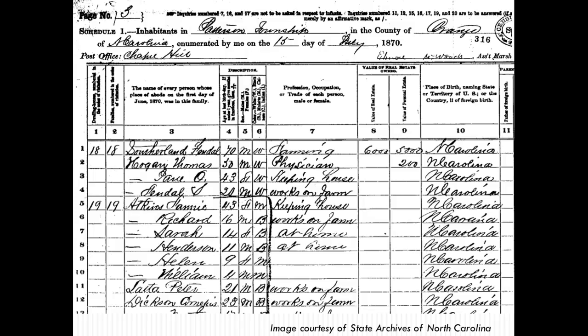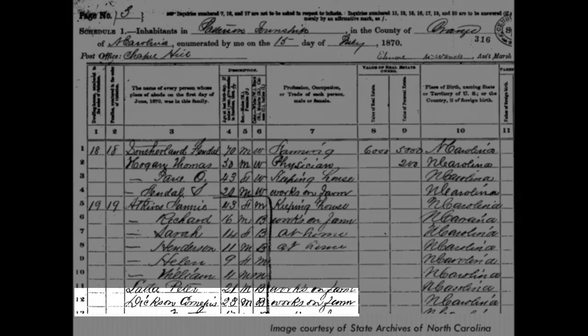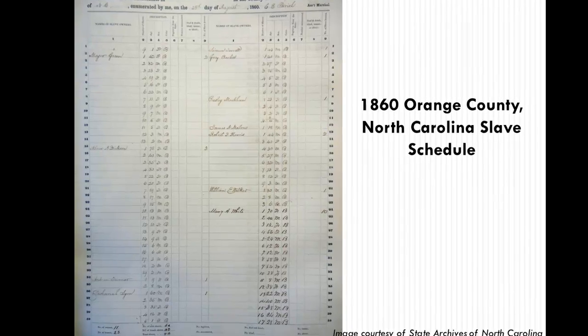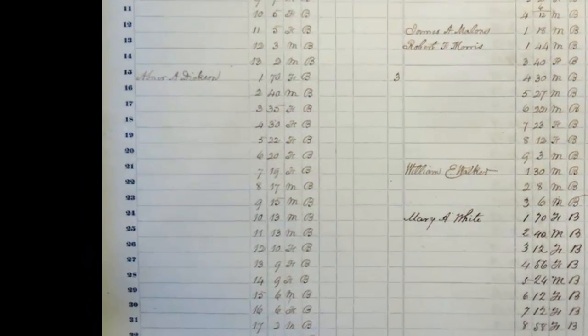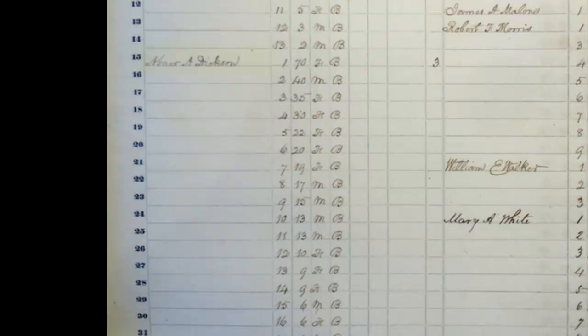To research enslaved ancestors, first look for your ancestor in the 1870 census, the first census after the Civil War in which newly freed people were listed by name. After locating an ancestor, proceed backwards to the 1860 slave schedule. Look for any slaveholders in that county with the same surname as the ancestor. Although recently emancipated slaves might have moved to another county or even to another state and could have chosen a different surname from the slaveholder, many stayed where they were and often took the surname of their former owner.